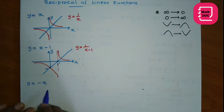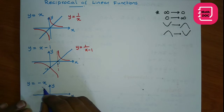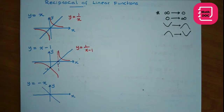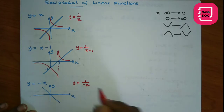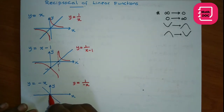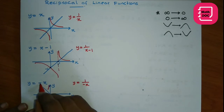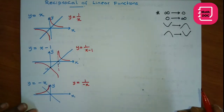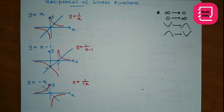Then let's get another one: y equals minus x. On the x-axis and y-axis, here is the graph of y equals minus x. Now the reciprocal is 1 over minus x. Here 0 goes to infinity. In the positive region, the reciprocal value is also positive: 0 goes to infinity and infinity goes to 0. For the negative region, 0 goes to infinity and infinity goes to 0. All follow a similar pattern.